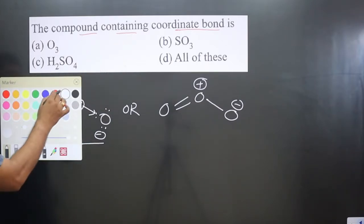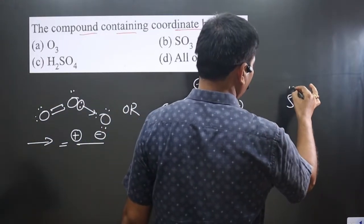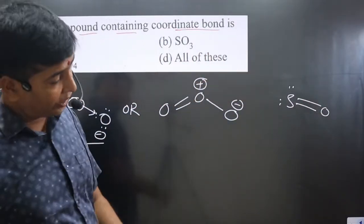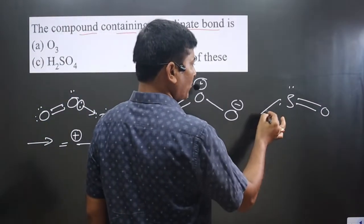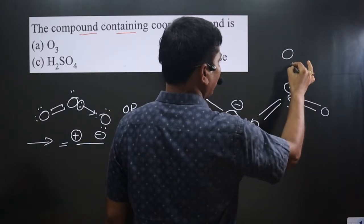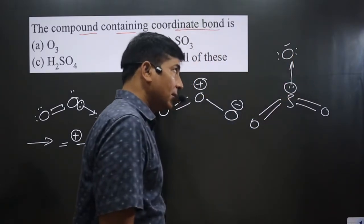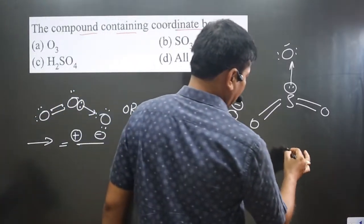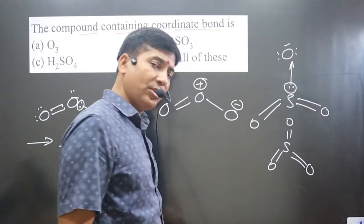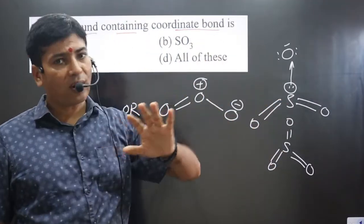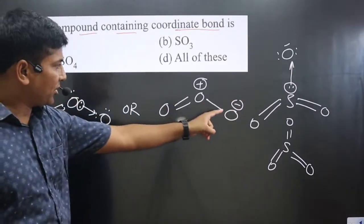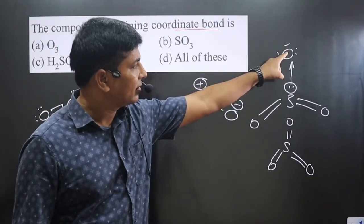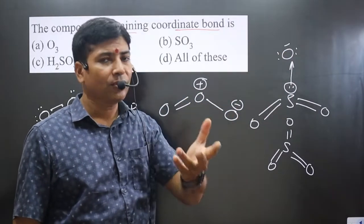Now we talk about SO₃. Sulfur has six valence electrons. It forms double bonds with oxygen, and oxygen can donate electron density because it has six valence electrons — donating a lone pair completes its octet too. A coordinate bond can be written here as well. Since both sulfur and oxygen are non-metals, coordinate bond formation may take place.